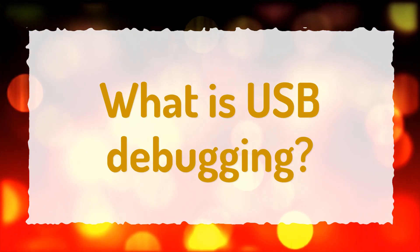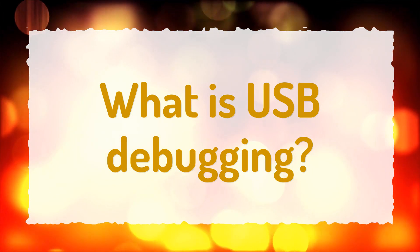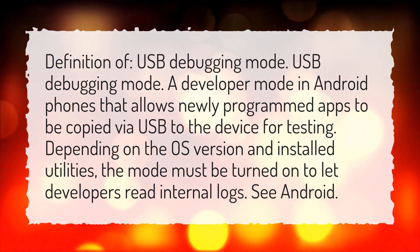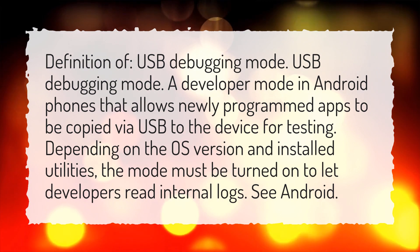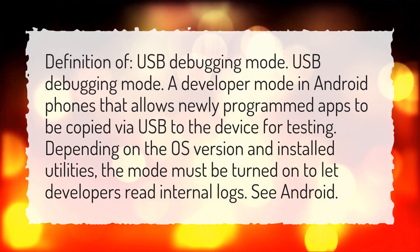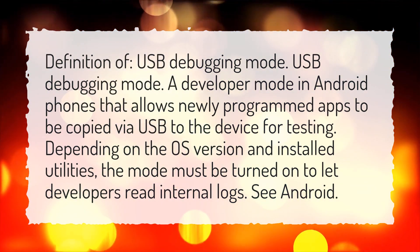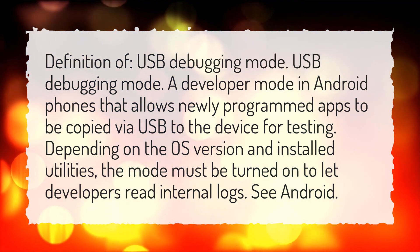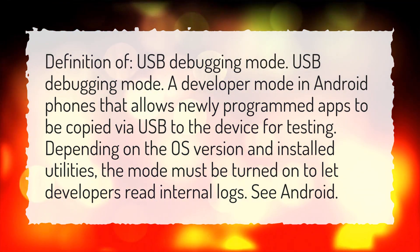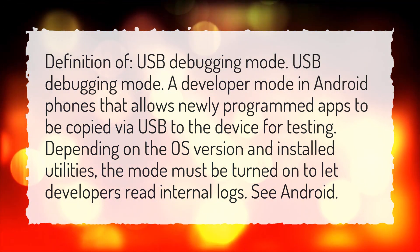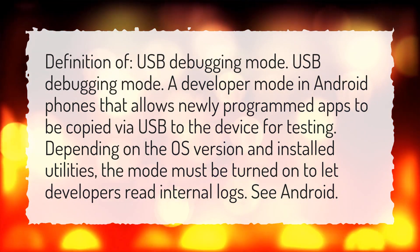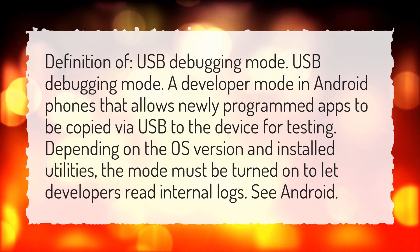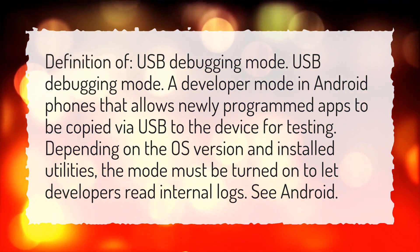What is USB Debugging? USB Debugging Mode is a developer mode in Android phones that allows newly programmed apps to be copied via USB to the device for testing. Depending on the OS version and installed utilities, the mode must be turned on to let developers read internal logs.